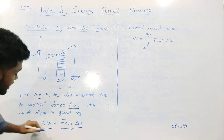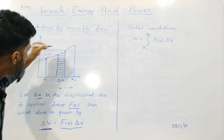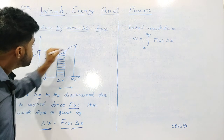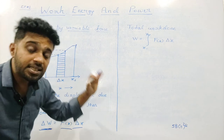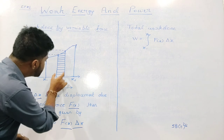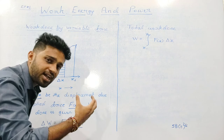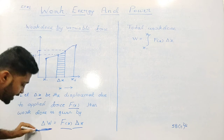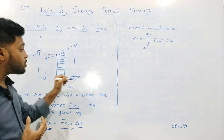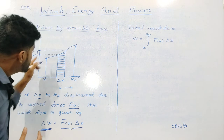Next, we need to calculate the total work done. We move the object from position x1 to position x2 — the total displacement. We sum up all the small amounts of work done delta w over all the small displacements delta x. So total work done is the sum from x1 to x2.